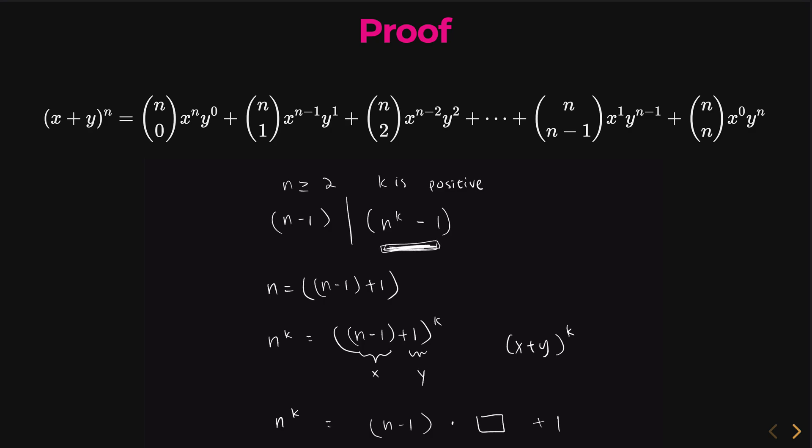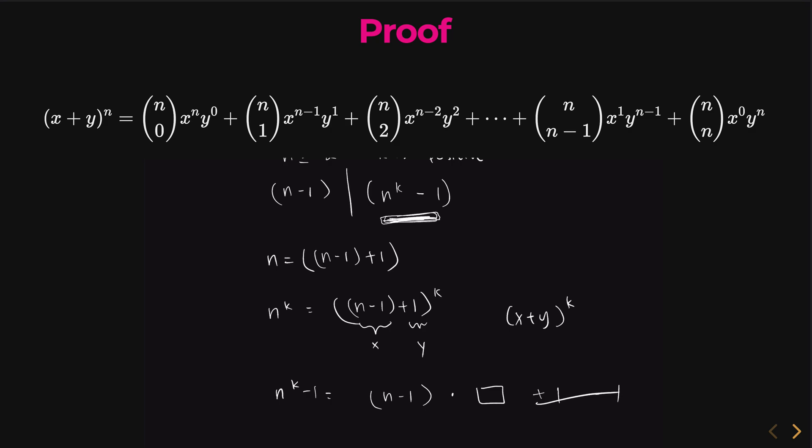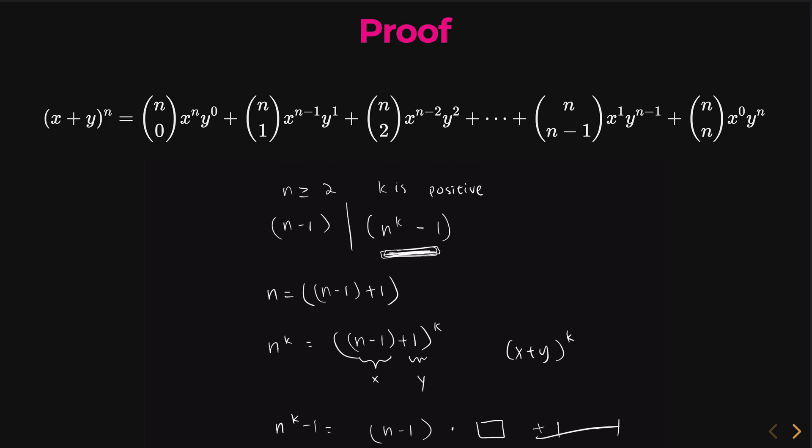Remember, our original thing that we're trying to prove is n to the k minus 1. So if we minus 1 on both sides, the 1s will easily cancel out. And we can see that n to the k minus 1 will equal n minus 1 times some integer.